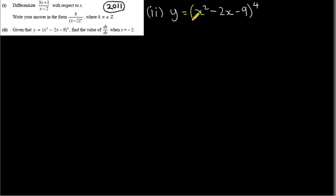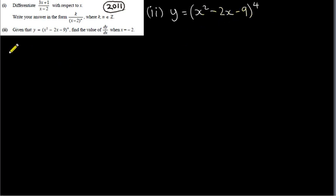In part 2, we have the function y equals x squared minus 2x minus 9, all raised to the power of 4. One way to do this would be to expand it out — multiplying x squared minus 2x minus 9 by itself four times — but that's far too time-consuming. Instead, we use what's called the chain rule to get around this, which enables us to differentiate this function without expanding the brackets.